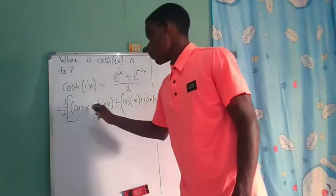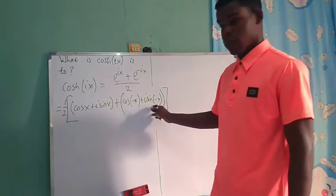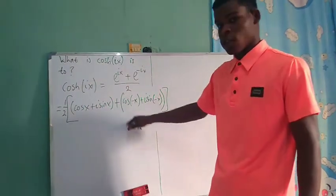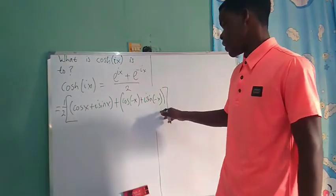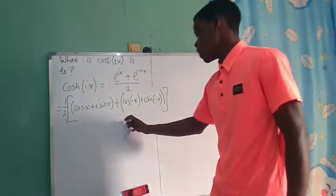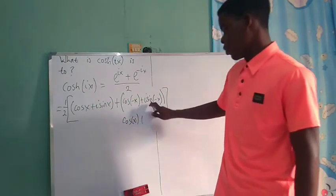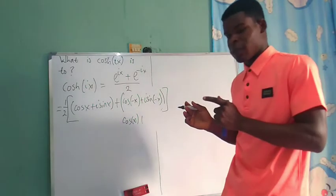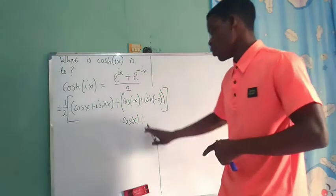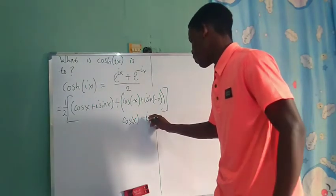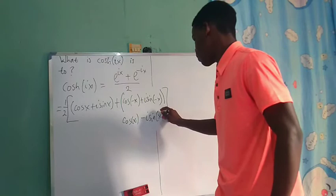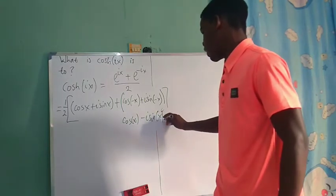Well, we have cosine of x plus i sine x. You know that the cosine function is an even function, while the sine function is an odd function, so we can get this to be cosine of x plus, you know, plus sine of a negative angle is something that's saying the negative sine of that angle. So we're going to get minus in this case, not plus.